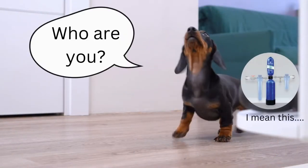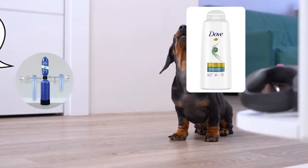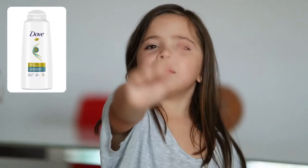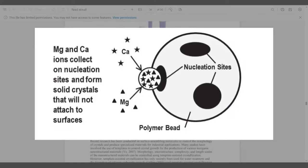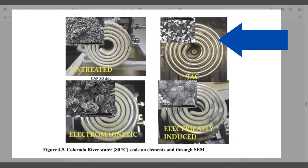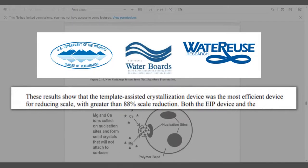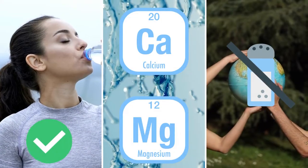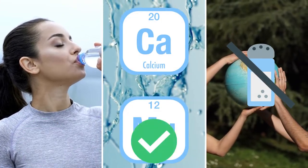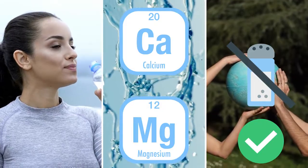First, let's address the elephant in the room. Water conditioners. What are they? They use template-assisted crystallization or TAC for short. They don't remove hardness minerals from water entirely. Instead, they convert them into a crystallized form. Once crystals, hardness minerals can't stick to surfaces and can't form scales. Water still tastes the same. Nutrients are preserved and no salt used. Everyone's happy.